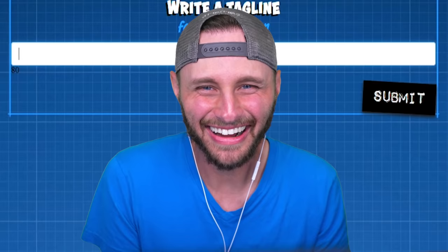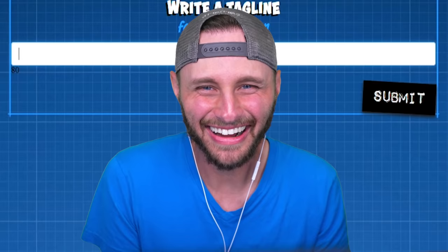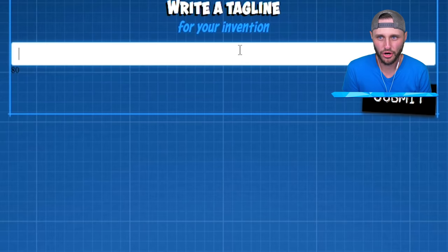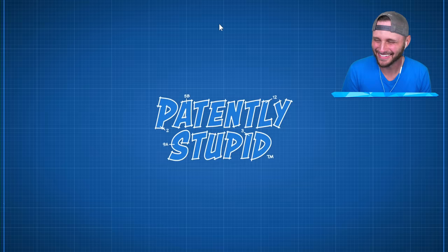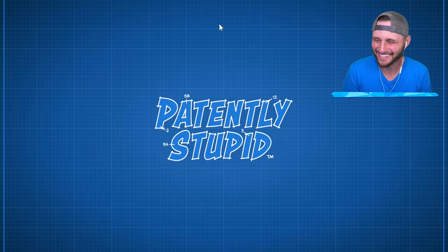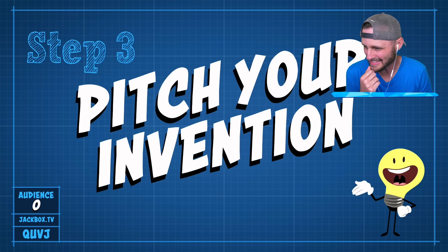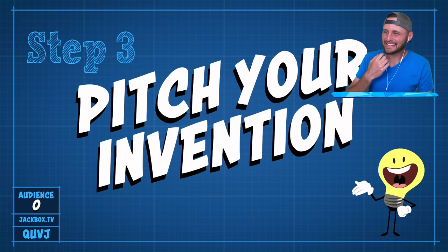Now we're gonna do a tagline. This is like our punchline. You know, you gotta sell it. The poo catcher pants. Where all your poos will be caught. I gotta think of a pun. I gotta find a pun. Poop puns. We've got the pooh-er to catch the poo. We've got the power to catch the poo. This is... Did I submit that? I don't know if that was submitted. Did that submit? I hope that was submitted. Now we gotta do our invention. Now, let's see those inventions.